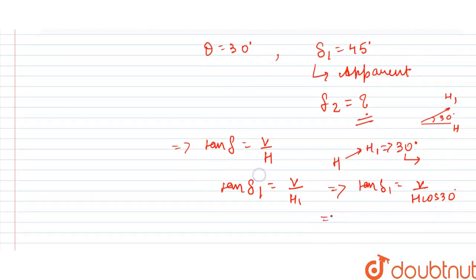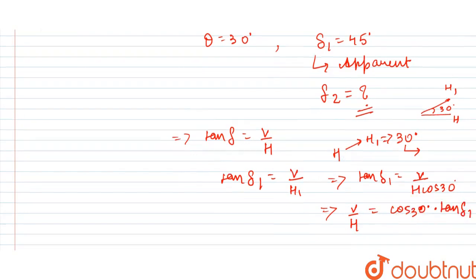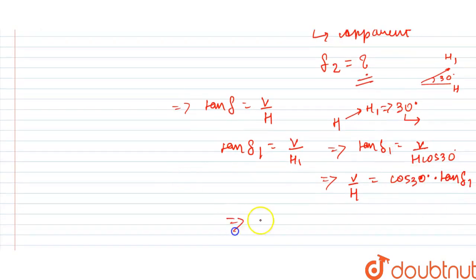So you can see V by H. We can write cos 30 into tan of delta 1. V by H, we can simply replace tan delta. Here delta is the actual angle of dip. So this value is cos 30 into tan delta 1.